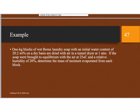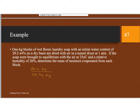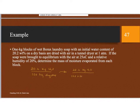So let's start by figuring out that this 20.2 percent is on a dry basis. What that means is that for every 100 kilograms of dry soap, I have 20.2 kilograms of water. If I put this on a wet basis, then 20.2 kilograms of water relates to 100 kilograms of dry soap plus that 20.2 kilograms of water, so 120.2 kilograms of wet soap. Therefore 0.168 is my mass fraction on a wet basis.